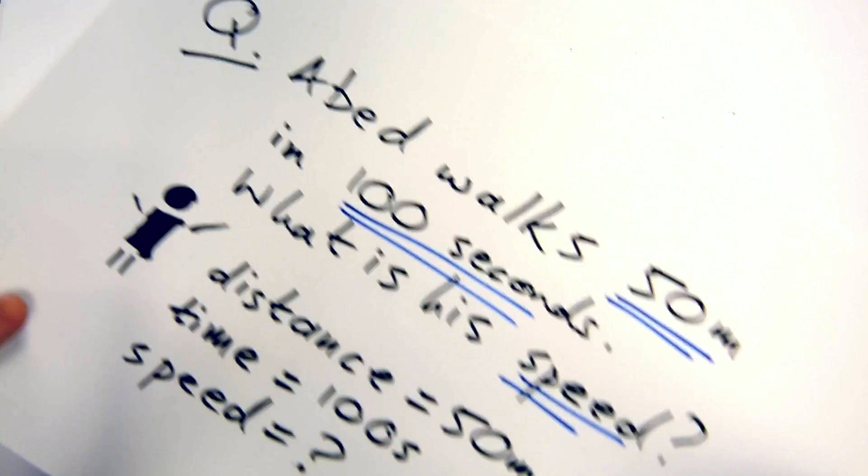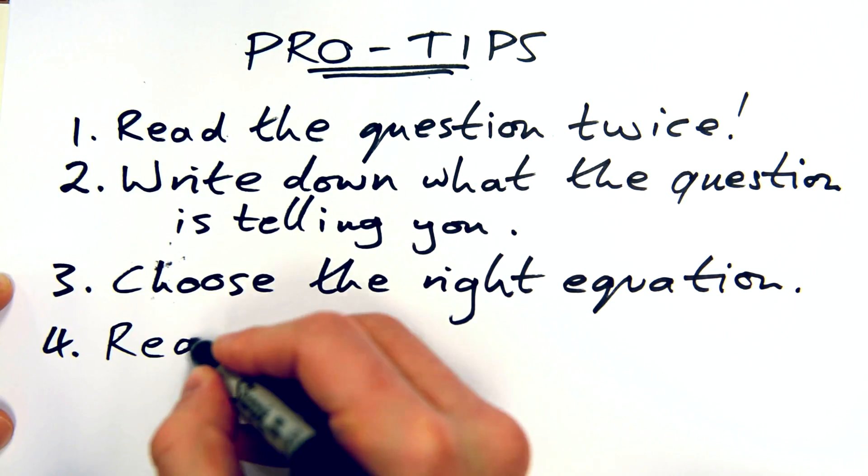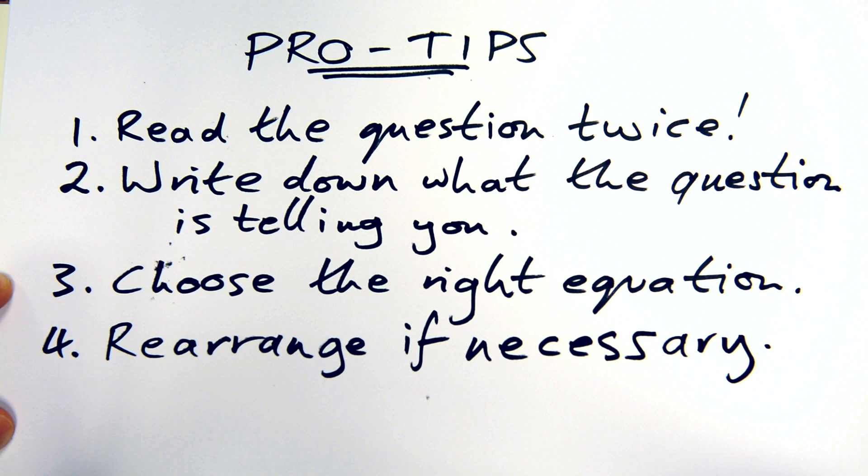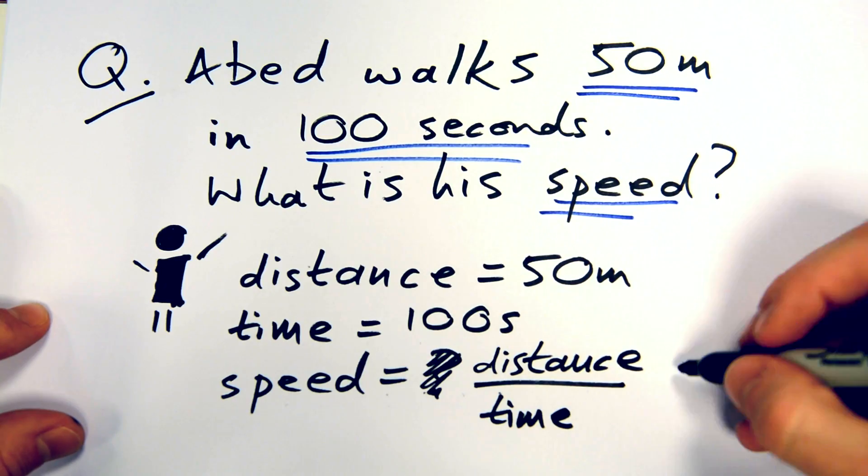Make sure you write down the equation in your answer. There's usually a mark just for doing that. Then check if you need to rearrange it. Do we need to here? No, because we're actually trying to find speed. And the last step, plug in the numbers and we end up with this answer here.